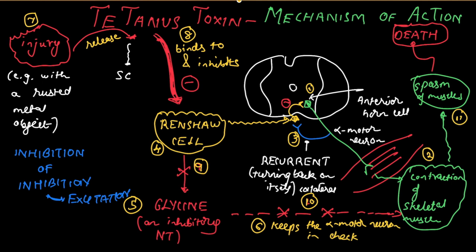So, the alpha motor neuron causes contraction of the skeletal muscle. A recurrent collateral synapses on the Renshaw cell and keeps the alpha motor neuron in check via glycine. Injury causes release of tetanus toxin, which inhibits the Renshaw cell, preventing glycine release. Inhibition of inhibition causes disinhibition and excitation, leading to uncontrolled contraction and spasm of the skeletal muscle — which can even lead to death.